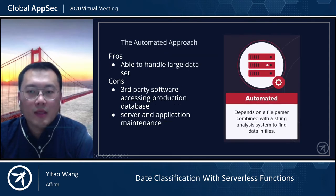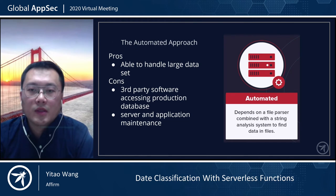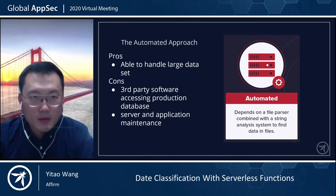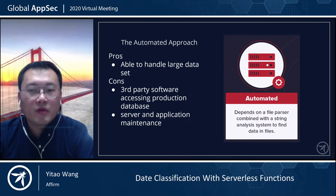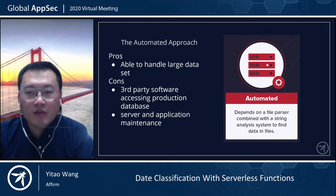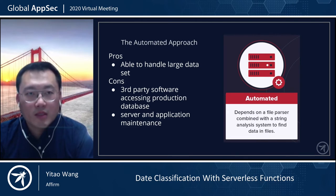The alternative way is to automate the data classification process. Today, it's typically done using third-party software, which is capable of handling large data sets but may bring extra risk as well. In this case, the company has to allow third-party applications to access the production database, which may risk data leaving the trusted boundaries. The third-party software might need maintenance and updates over time, resulting in network traffic to an external server, and the maintenance will probably be carried by the IT or infrastructure team, requiring cross-functional work.